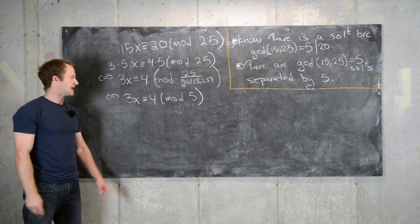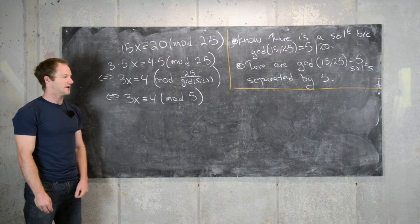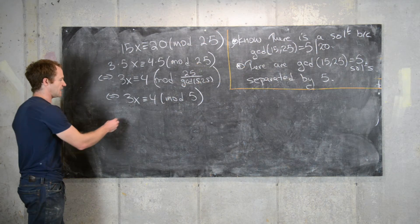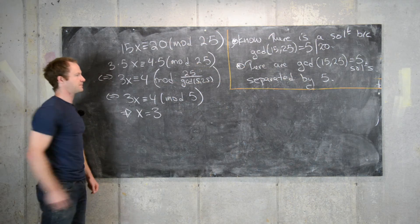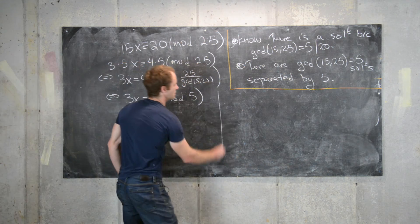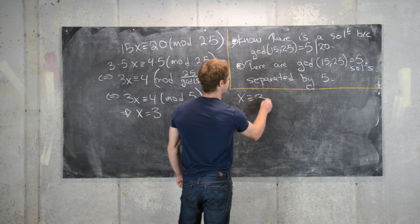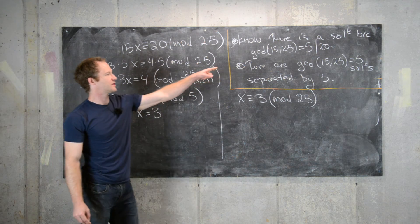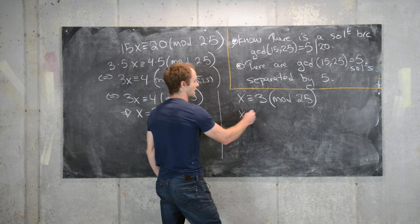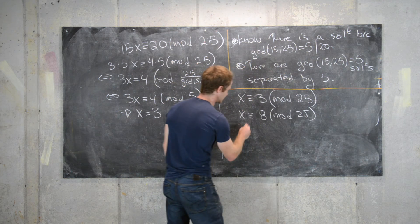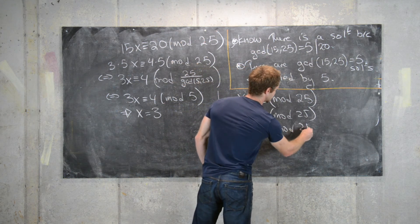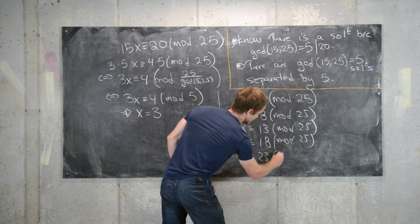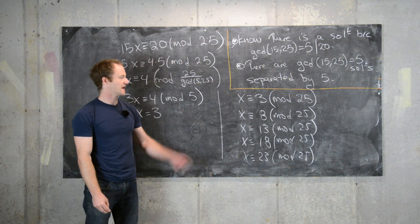We can guess since we're working modulo a small number. 3×1 = 3, 3×2 = 6 ≡ 1 mod 5, 3×3 = 9 ≡ 4 mod 5 — so x = 3 is a solution. That means one solution is x ≡ 3 mod 25. Since there are 5 solutions each separated by 5, the complete set of solutions is x ≡ 3, 8, 13, 18, 23 mod 25.